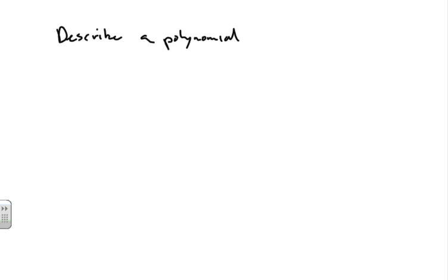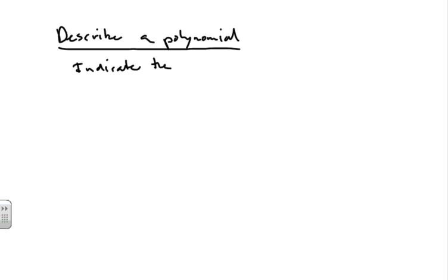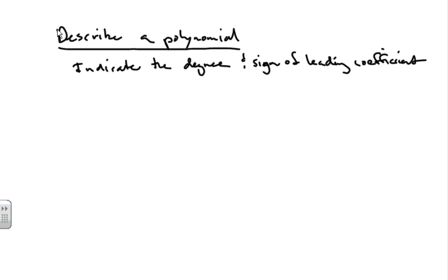Welcome! We're going to continue our discussion on polynomials. This is a problem where students have to describe a polynomial given its graph. By describing it, we have to indicate the degree and identify the sign of the leading coefficient. Given a graph, that's what we're going to do.